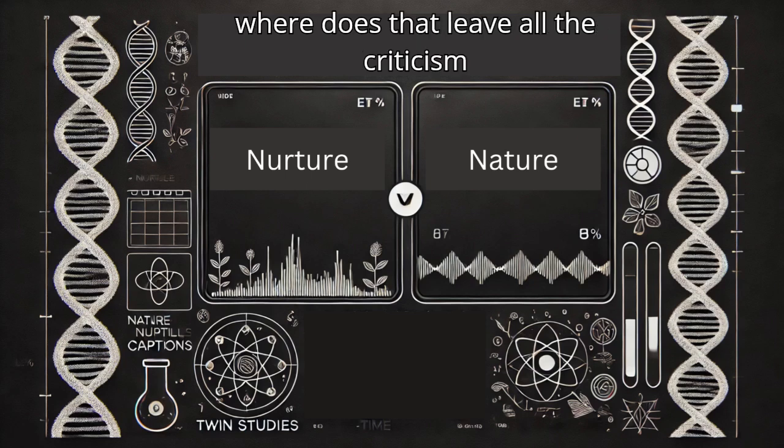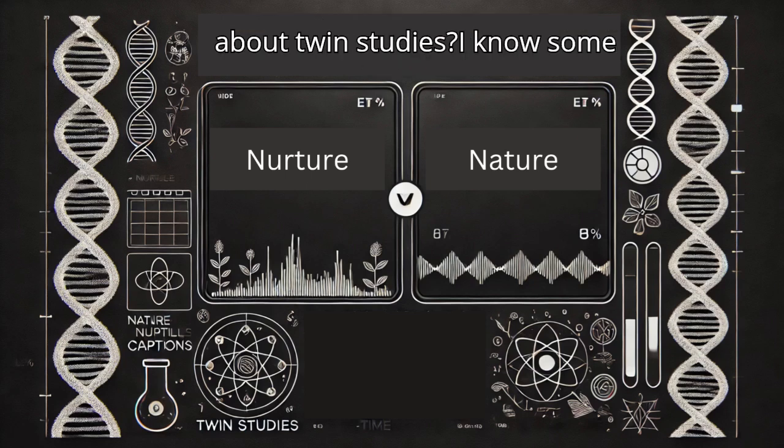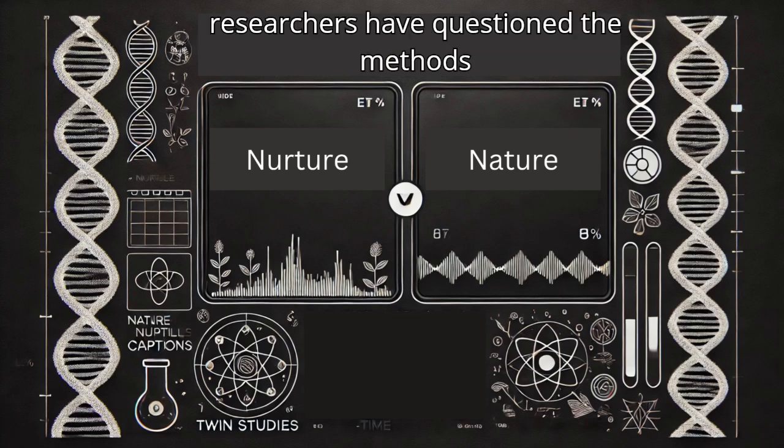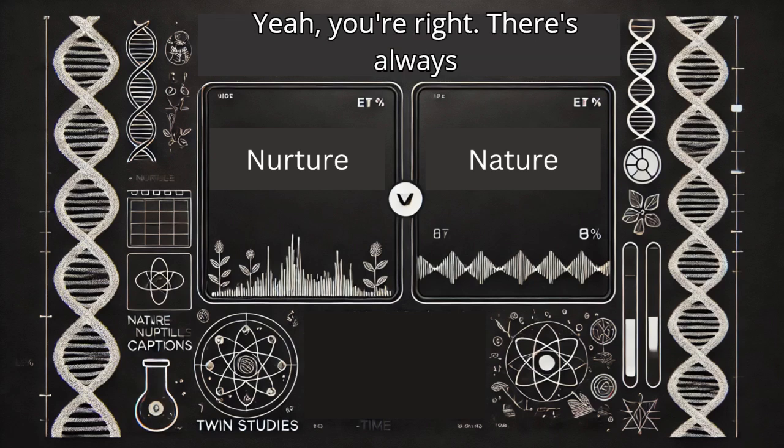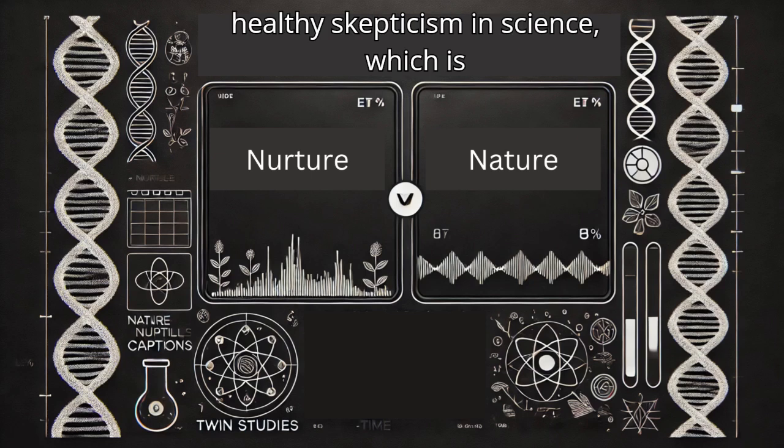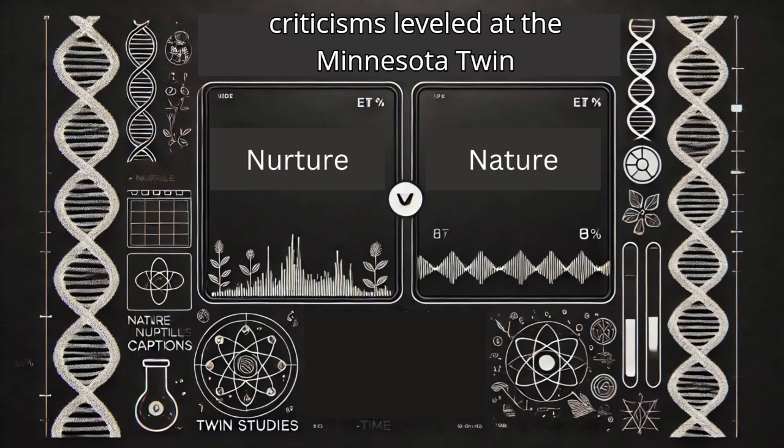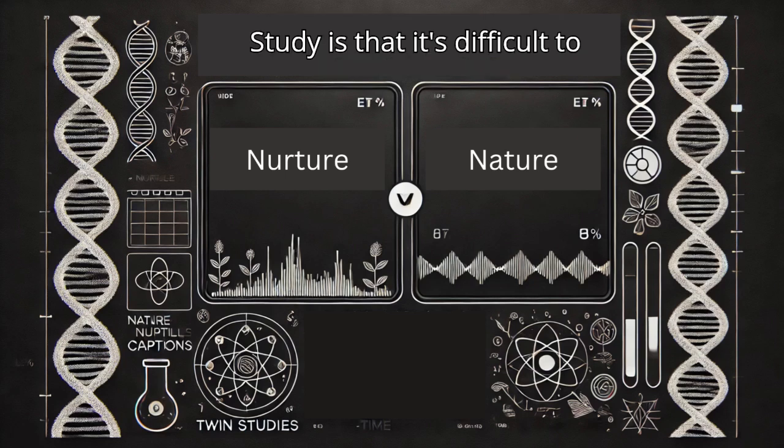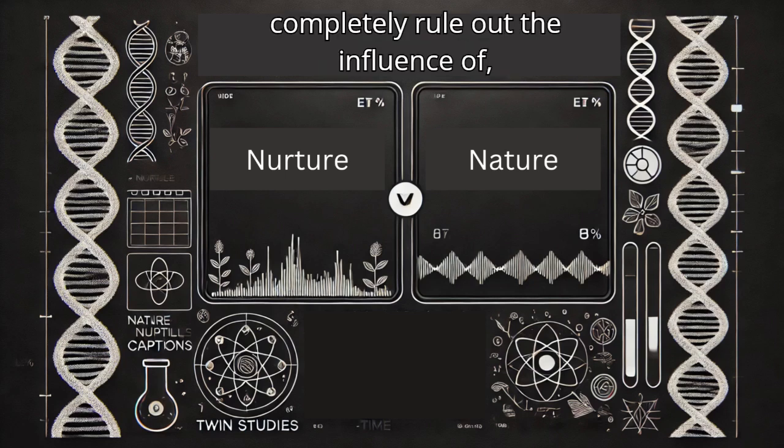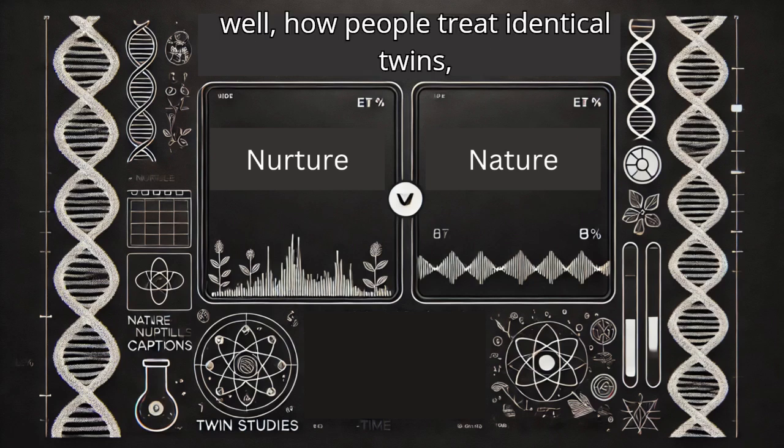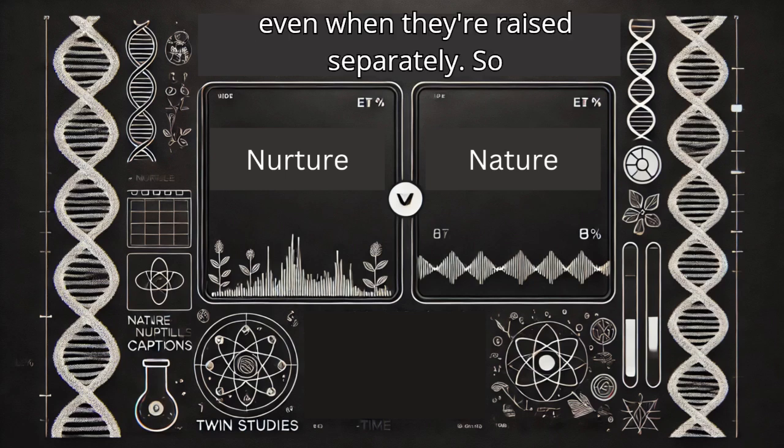So then where does that leave all the criticism about twin studies? I know some researchers have questioned the methods and the conclusions drawn from them. You're right. There's always healthy skepticism in science, which is how it should be. One of the criticisms leveled at the Minnesota twin study is that it's difficult to completely rule out the influence of how people treat identical twins, even when they're raised separately.